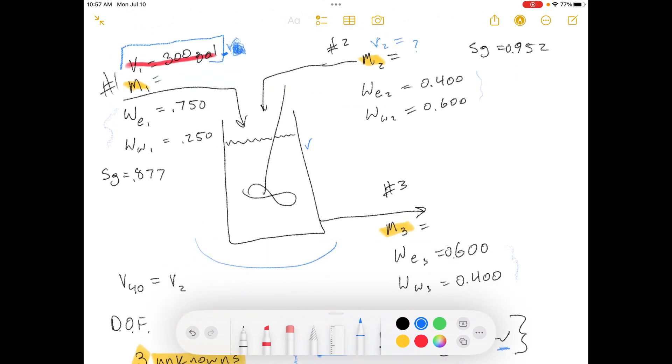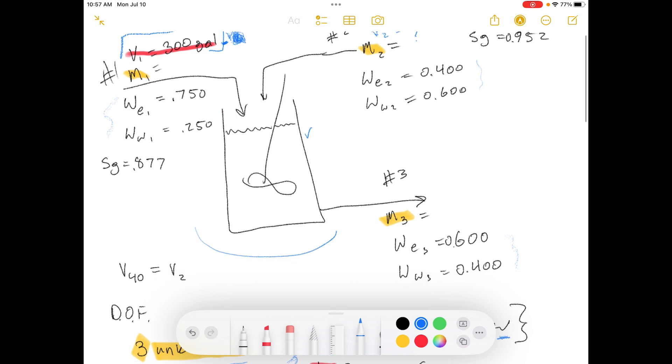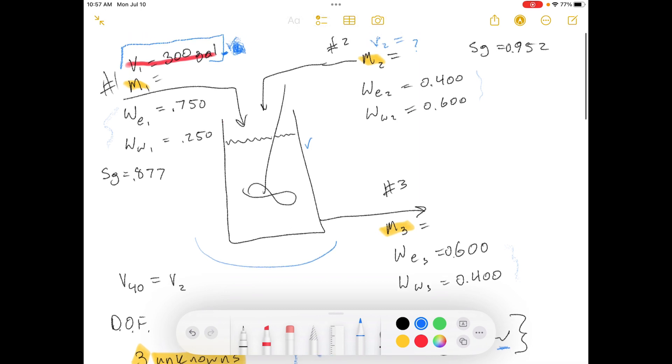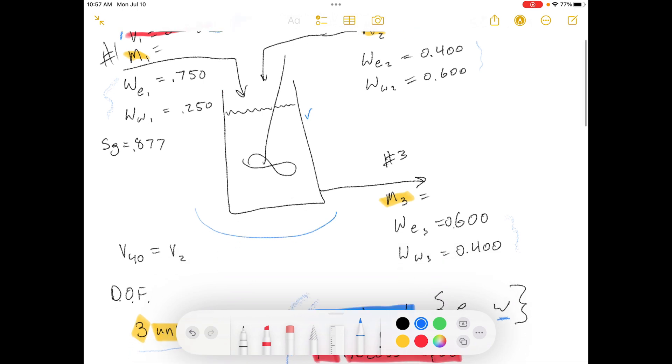Now if you just tried to do an overall mass balance without using the extra information that we know, then the overall mass balance would not be an independent equation. So it's important that you add in the extra information you know in order to make it different from the first two mass balances that we did.